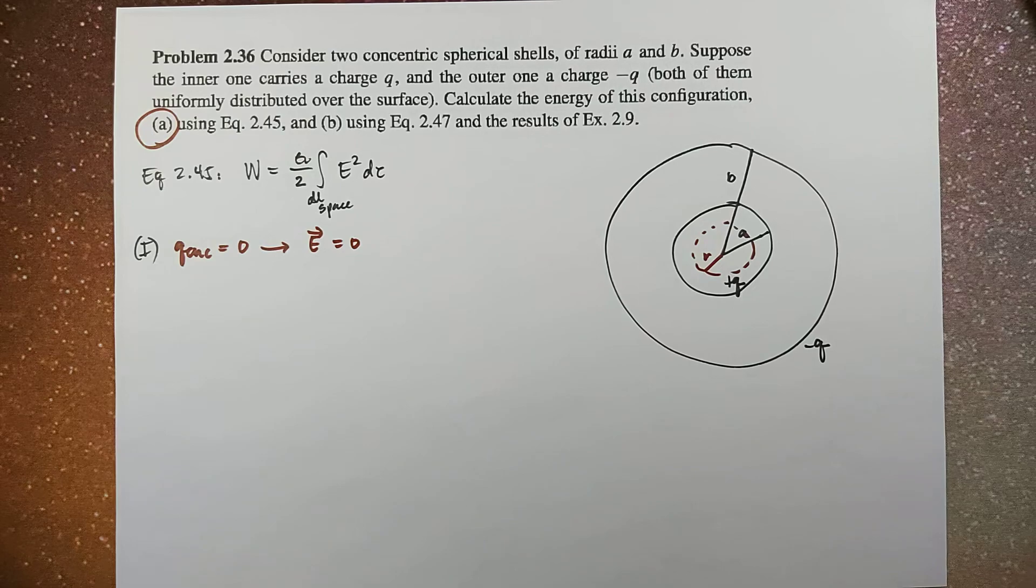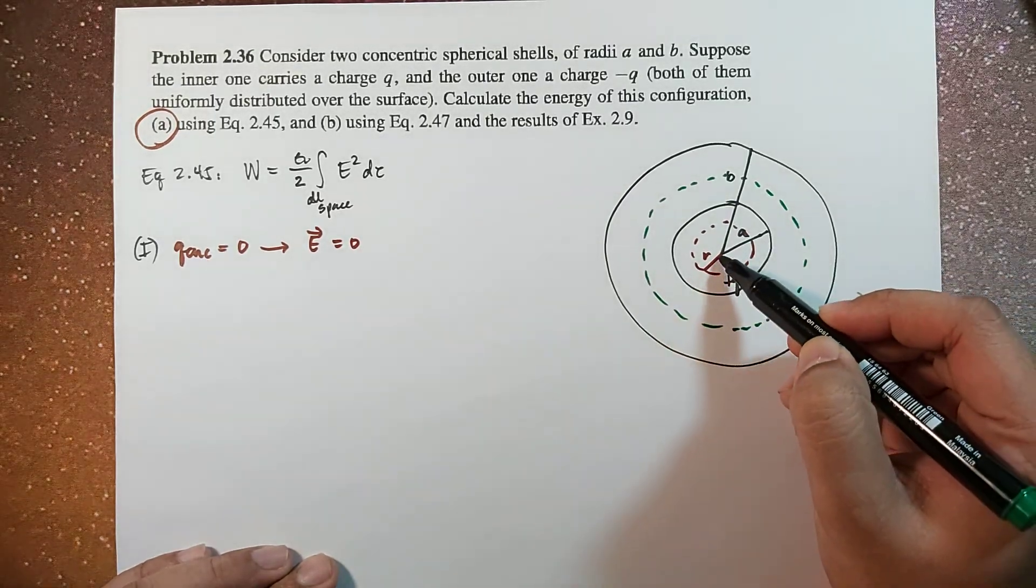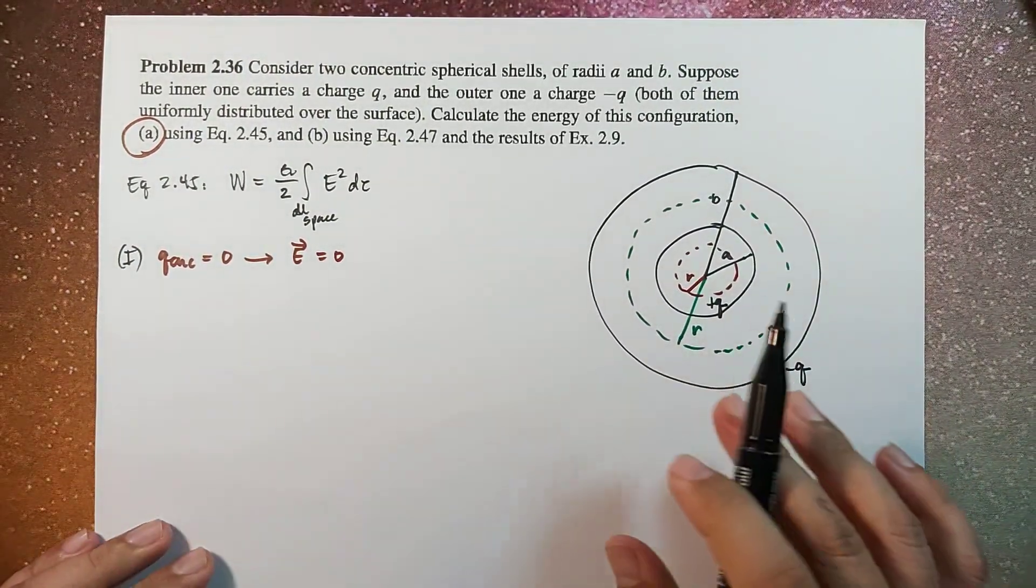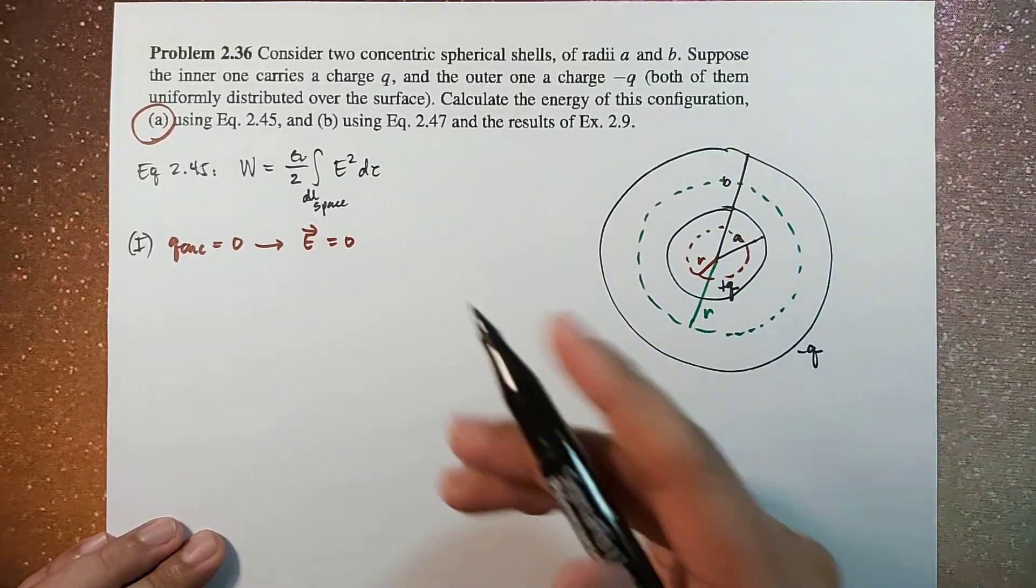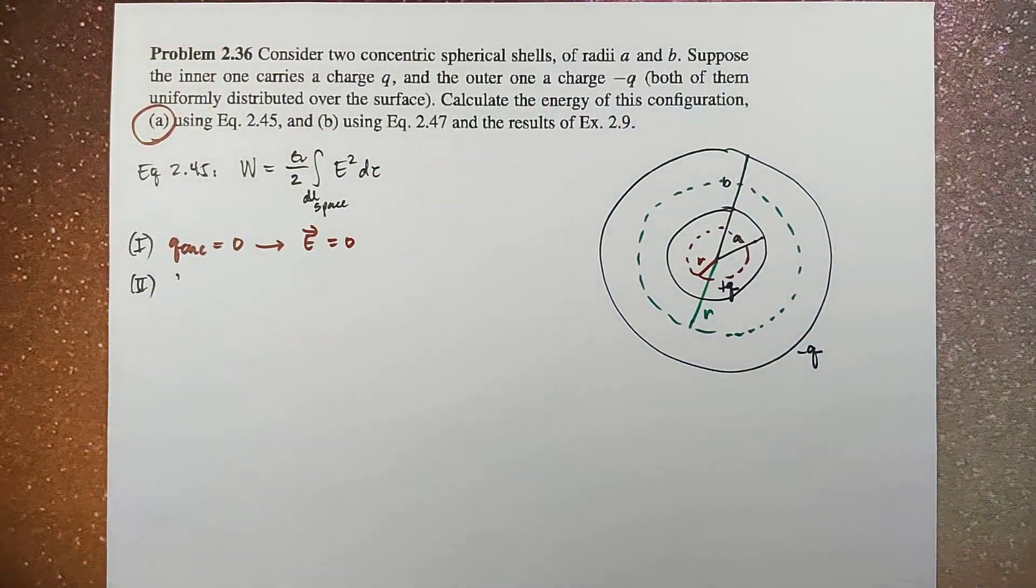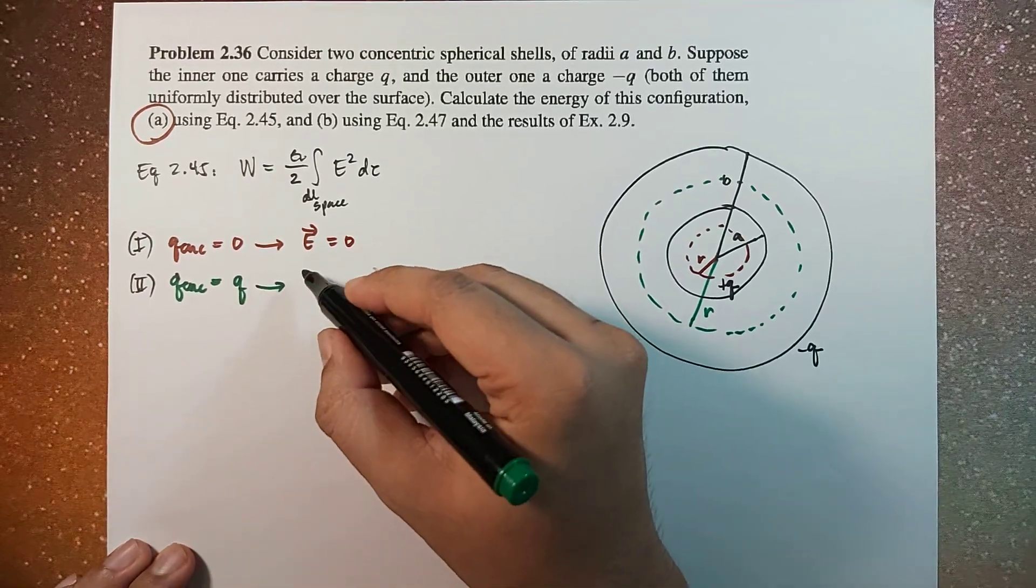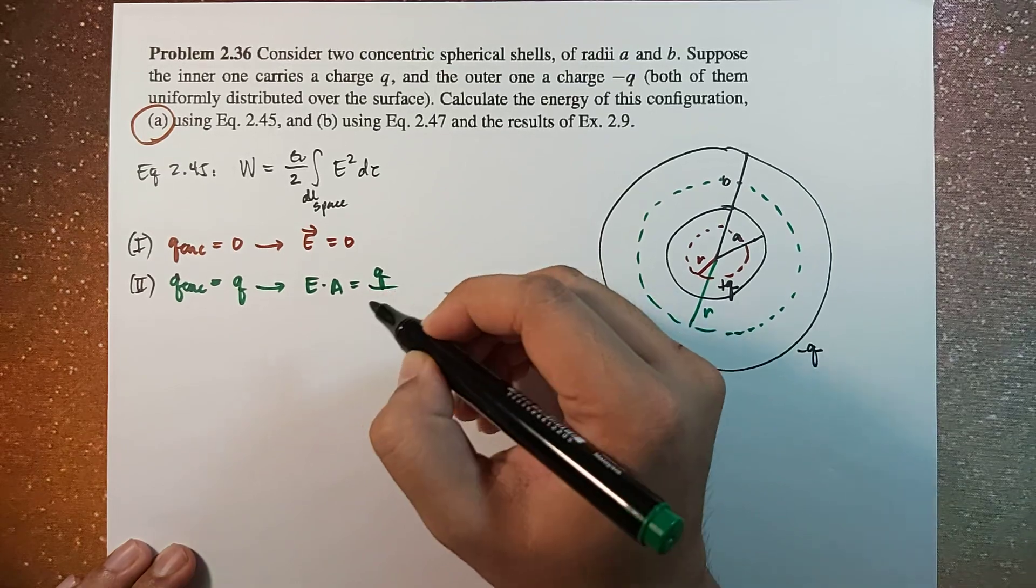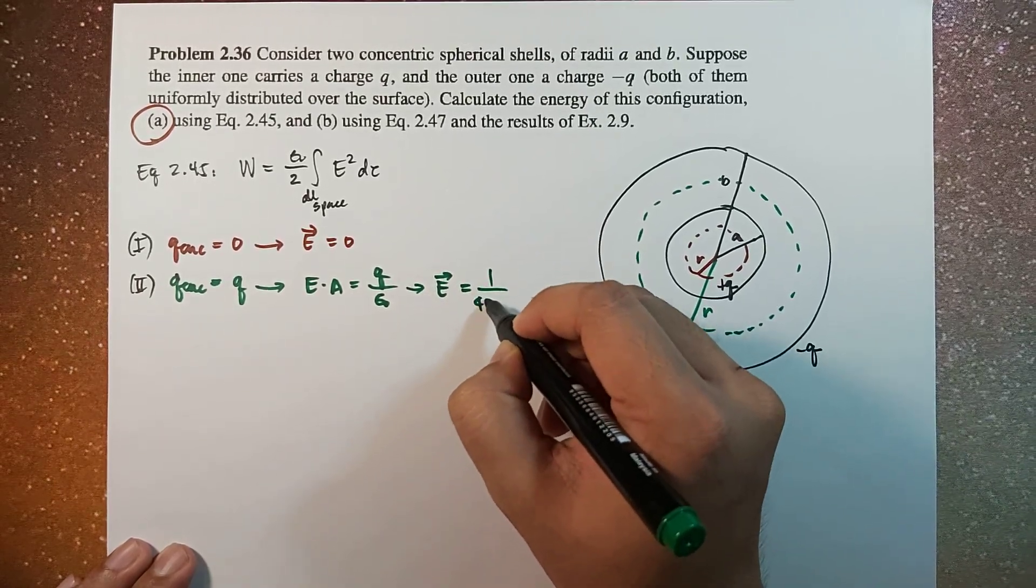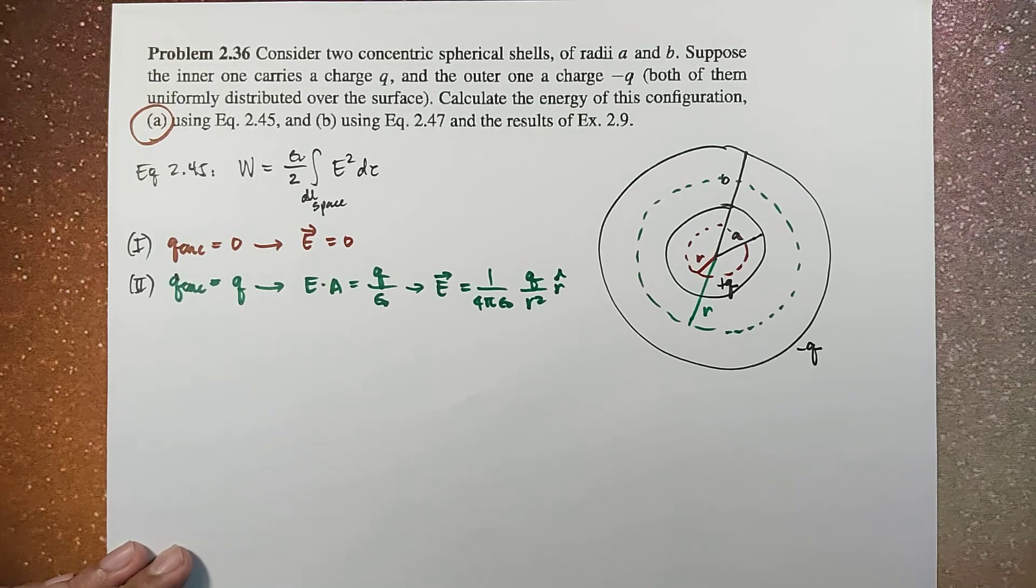Now, for the region between the two shells, this is R, so we notice that for region number 2, Q enclosed is equal to Q. So therefore, by Gauss' law, this is E times A equals Q over epsilon naught. So this will yield an electric field of 1 over 4 pi epsilon naught times Q over R squared, R hat.